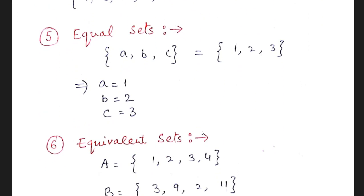What are equal sets? Two sets are said to be equal. The first set is equal to first and second is equal to second and third is equal to third. They are said to be equal sets.